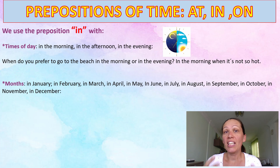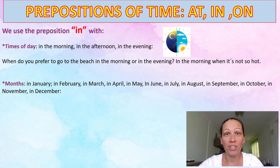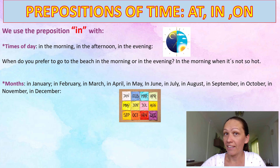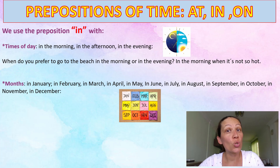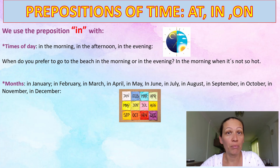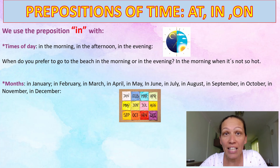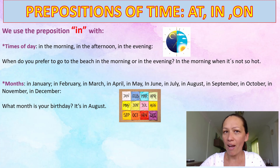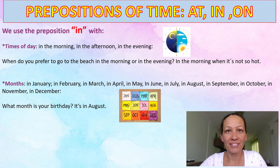We use the preposition 'in' with months. For example: in January, in February, in March, in April, in May, in June, in July, in August, in September, in October, in November and in December. For example: what month is your birthday? It's in August. So my birthday is in August.